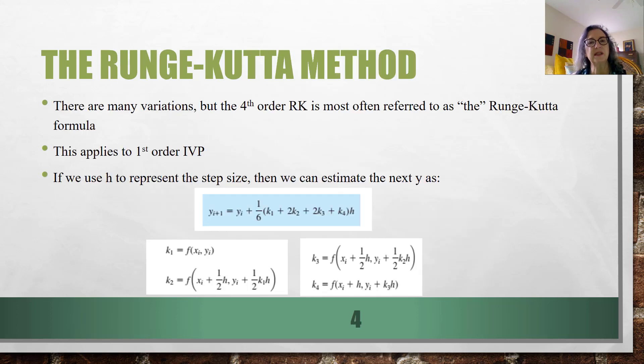But a better technique is the Runge-Kutta method. And there are many variations of Runge-Kutta, but the fourth order Runge-Kutta is the one that's usually referred to as the Runge-Kutta formula. And this is the form that we're using that applies to first order initial value problems.